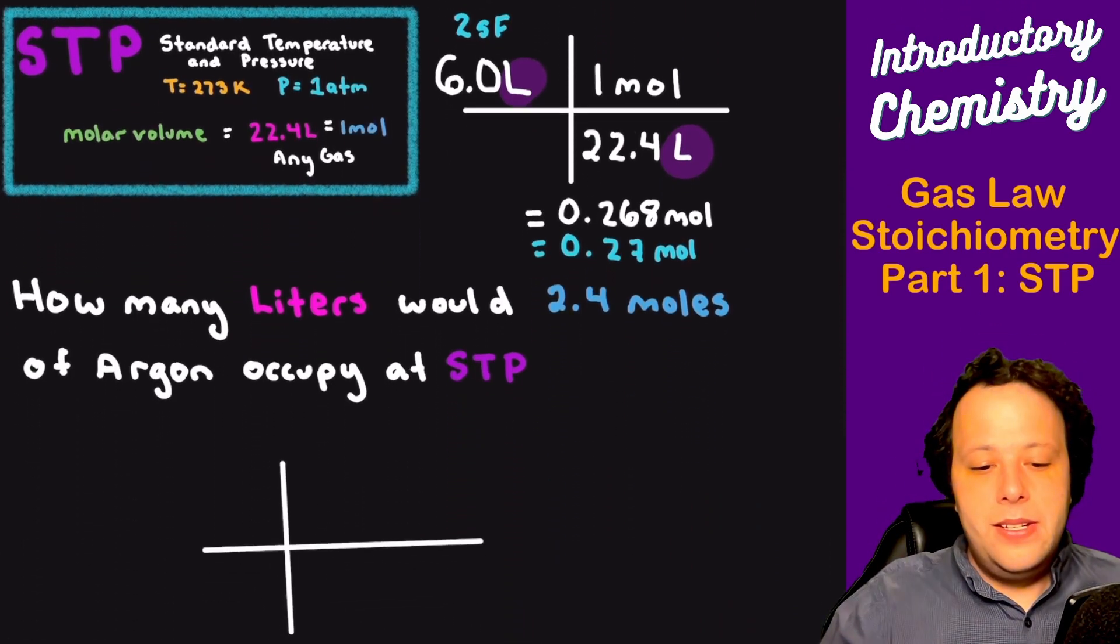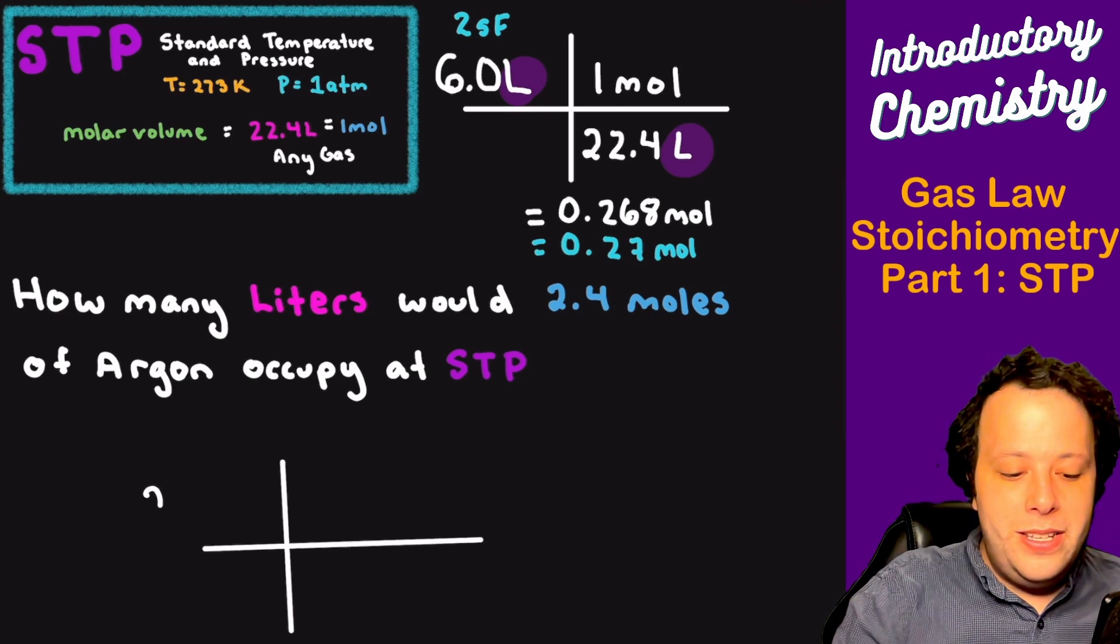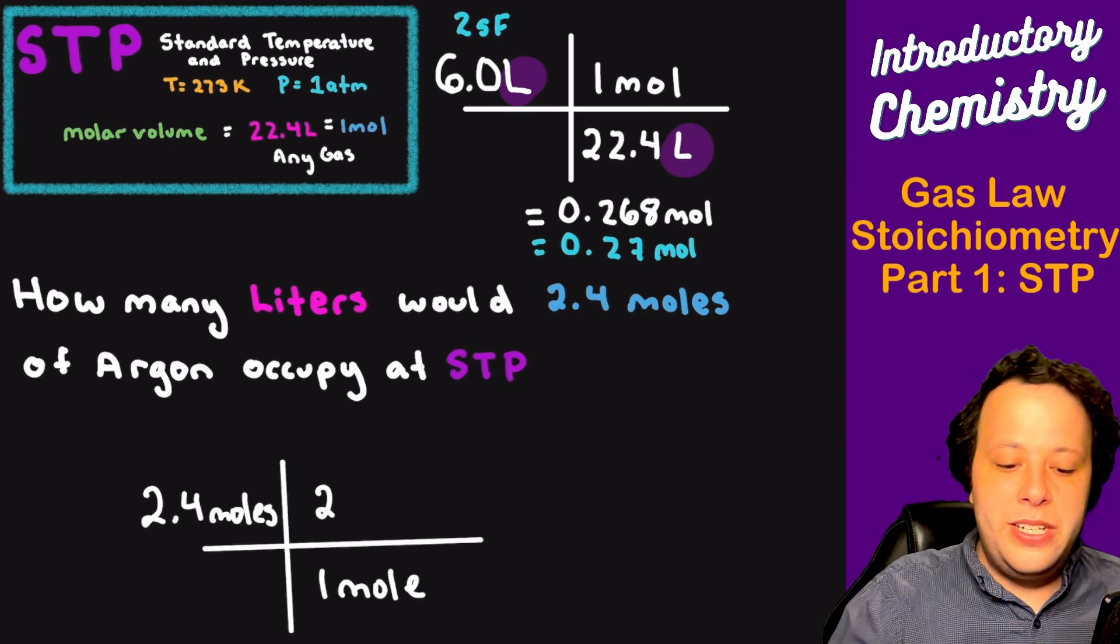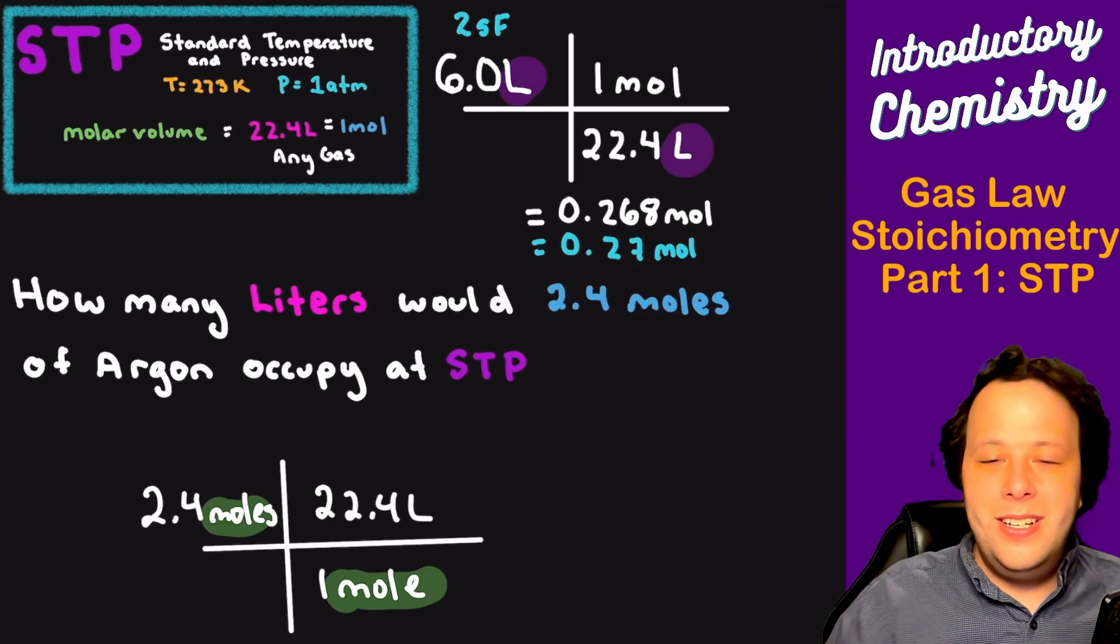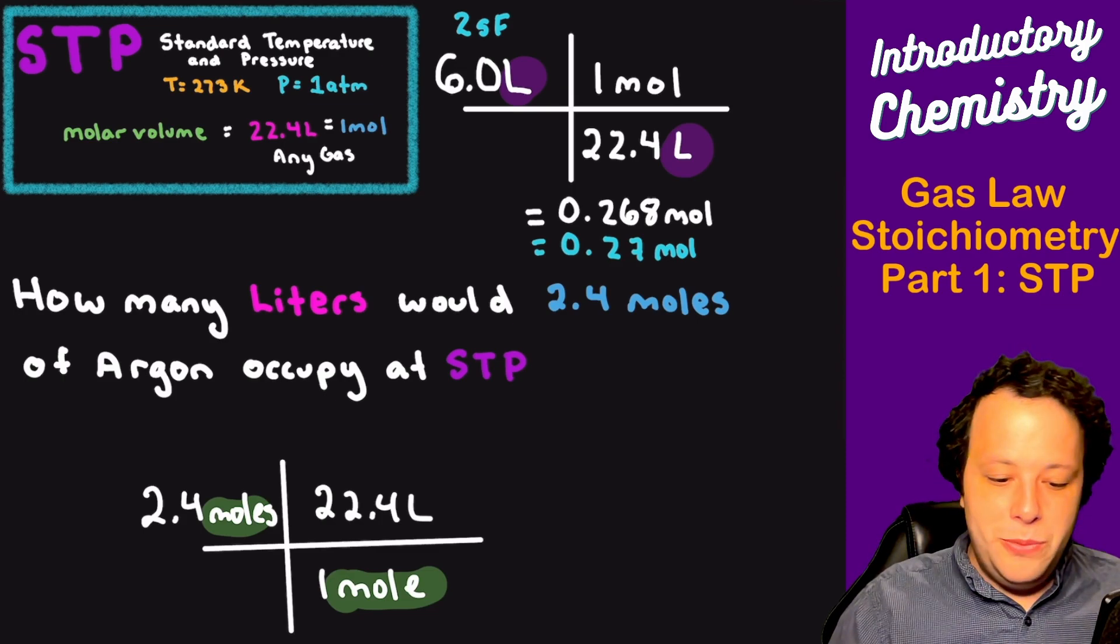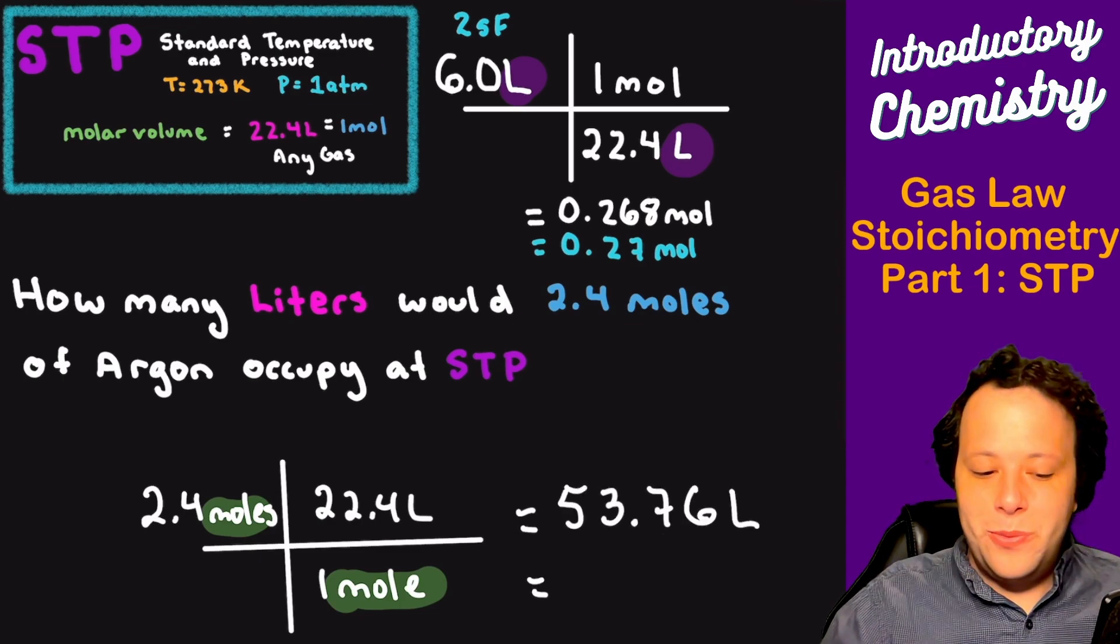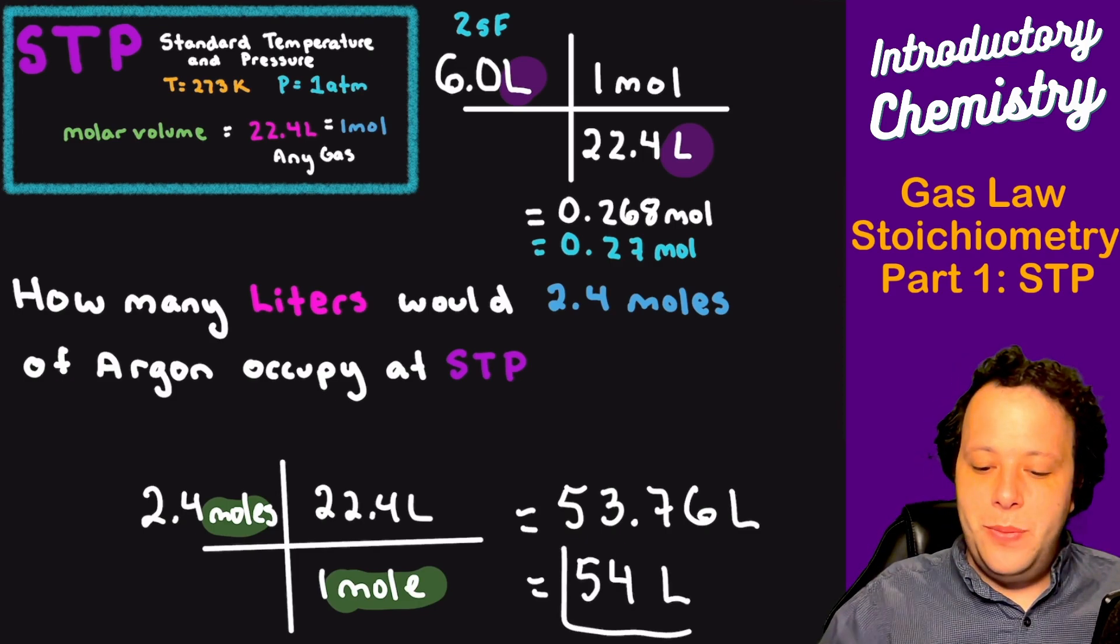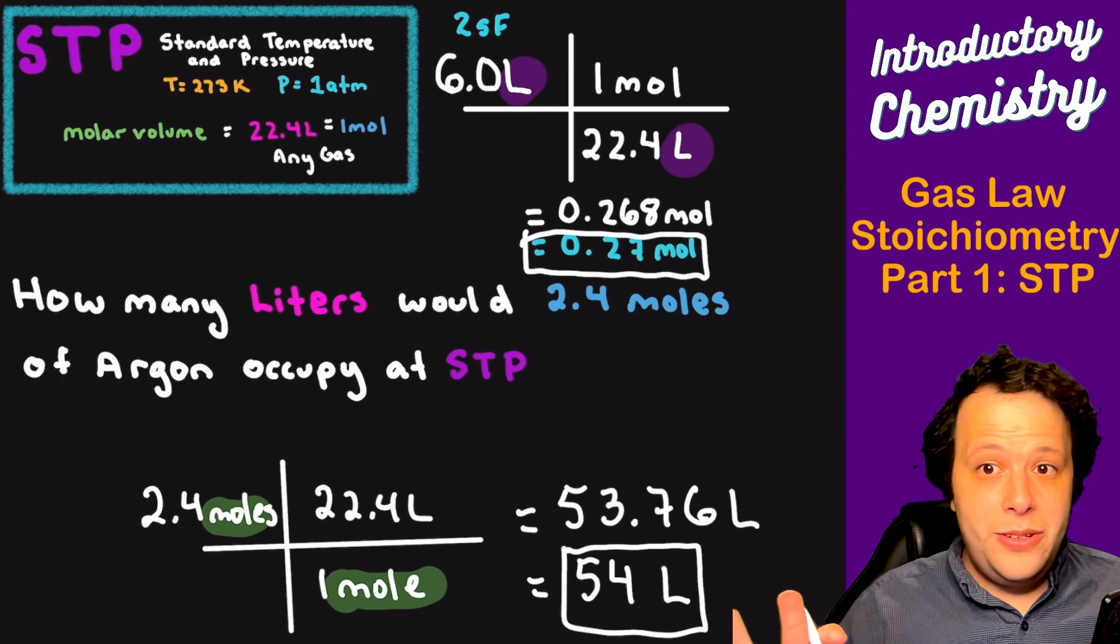Let's take a look at the next one. What if I want to do the other way? How many liters would 2.4 moles of argon occupy at STP? Well, same idea, right? If I have 2.4 moles, that's going to be on top. We'll put one mole on the bottom, 22.4 liters on top, and moles cancel. So we now have 2.4 times 22.4, and as a result, we get 53.76 liters, and we round that to two sig figs, so we get 54 liters. And when we're done, we want to box our answer off, and that is how you do it with just the STP conversion.